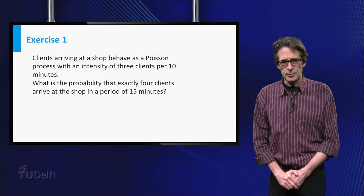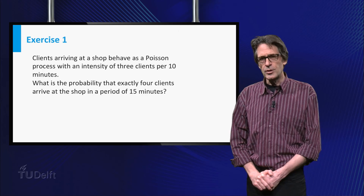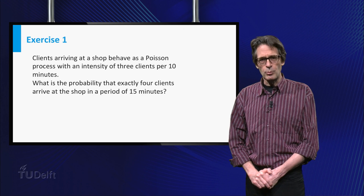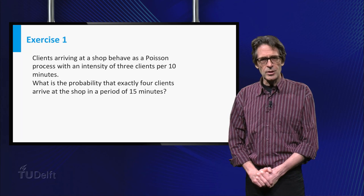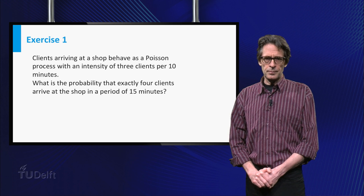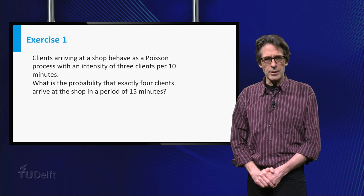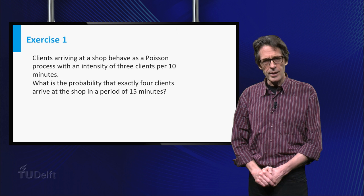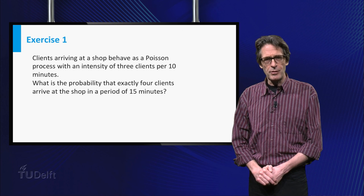I conclude with an exercise. Suppose clients arrive at the shop according to a Poisson process with an intensity of 3 clients per 10 minutes. What is then the probability that exactly 4 clients arrive in a period of 15 minutes?